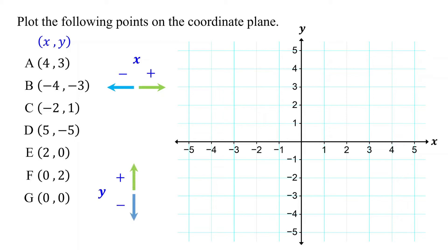Let's see how this works with our examples. For point A, the x-coordinate is positive 4. So we start at the origin and move to the right 4 units. The y-coordinate is positive 3, so from where we left off, we move up 3 units. Finally, we mark the point where we end up. This is the point (4, 3).